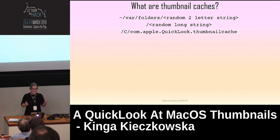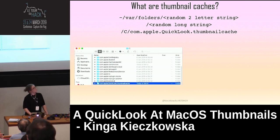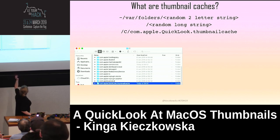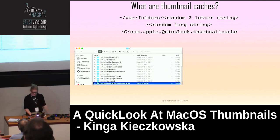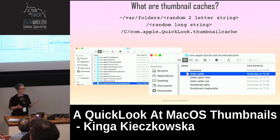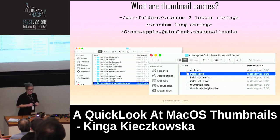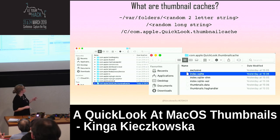It's just a directory within many other different caches there. Within that directory we have from three to seven files, because there are some additional SQLite files being created. The ones we are most interested in are the index.sqlite database and thumbnails.data.